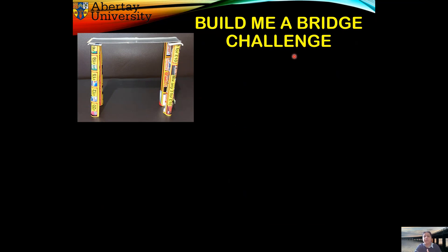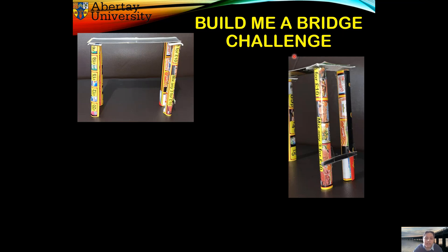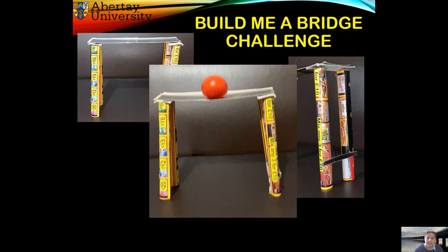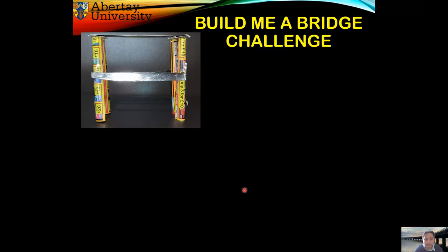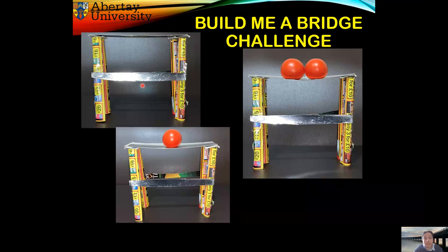A taller, fancier bridge — in this case you can see it couldn't hold up standing, so I had to add bracing to get it to hold together. These are all made from recyclable materials. It barely could hold the weight of one tomato. But after adding more bracing, it could hold two tomatoes. These are all simple examples.